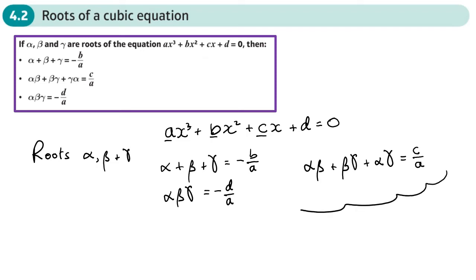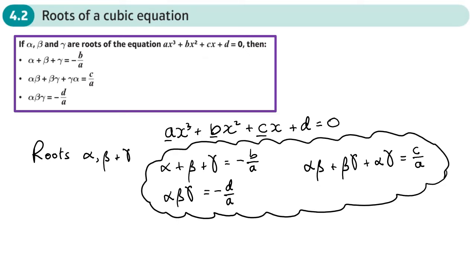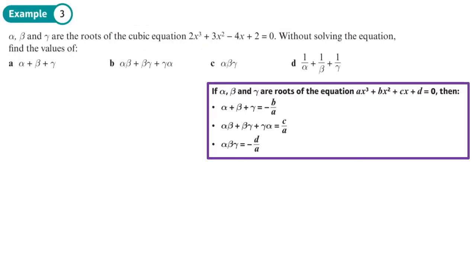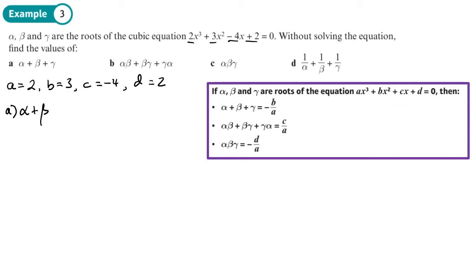We're now furnished with these rules for cubics and we're going to do something very similar to what we did with quadratics. Here are three roots of our cubic: alpha, beta, and gamma. I can see a, b, c, and d in the equation: a equals 2, b equals 3, c is negative 4, and d is 2. In part a, I want to find alpha plus beta plus gamma, which is negative b over a — that's negative 3 over 2.